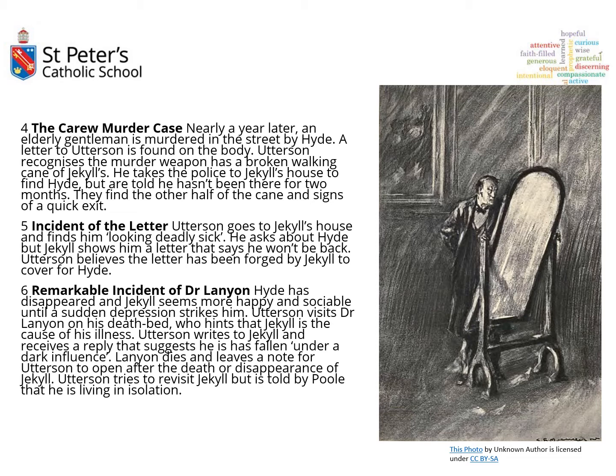Chapter Four: 'The Carew Murder Case' — the murder of an old MP described as quite a beautiful man. Chapter Five: 'Incident of the Letter' — Utterson visits Jekyll's house and finds him looking deathly sick. Jekyll gives Utterson a letter saying Hyde won't be back; Utterson believes the letter has been forged. Chapter Six: Hyde has disappeared and Jekyll returns happier and more sociable, but then quickly declines again. Eventually we have the death of Dr Lanyon, with further hints about something he won't or can't say about why he's dying.